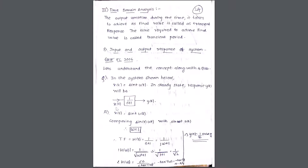To summarize: x(t) = sin(t)·u(t) is the input, comparing with sin(ωt)·u(t) gives ω = 1. The transfer function H(s) = 1/(s+1), written as 1/(jω+1). Find the magnitude — you get 1/√2 — and the angle is −π/4. Ultimately y(t) = (1/√2)·sin(ωt − π/4). You can also write ω = 1 since the input frequency is 1.